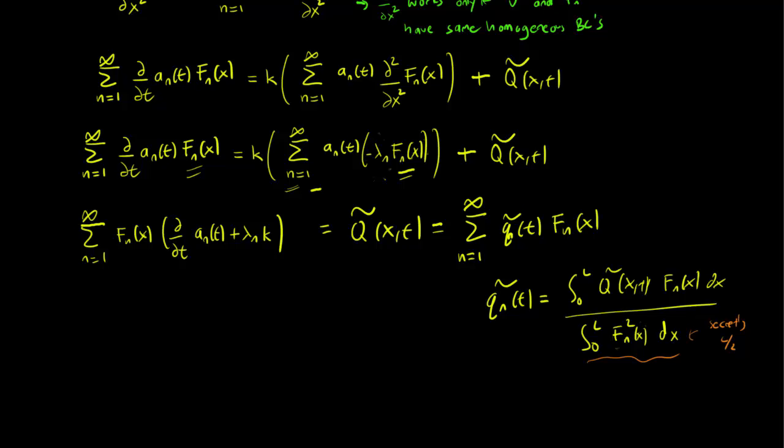So you get a 2 over l term that you might find more familiar. But anyway, we know what the q_n(t) are. They are just the Fourier coefficients, which we know how to calculate.